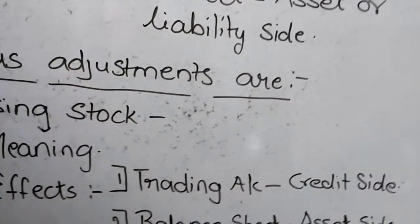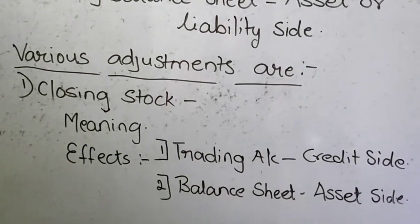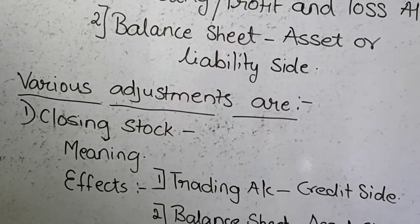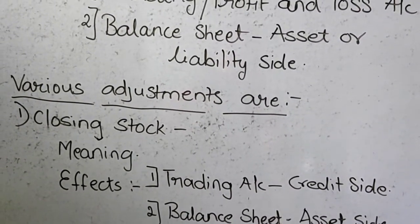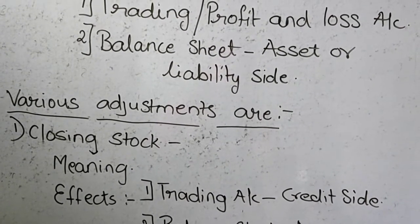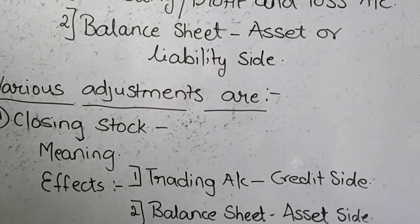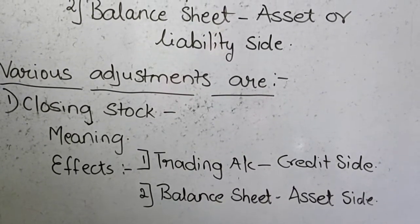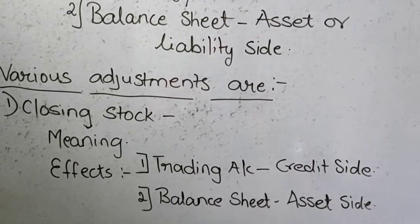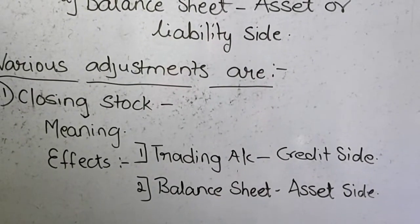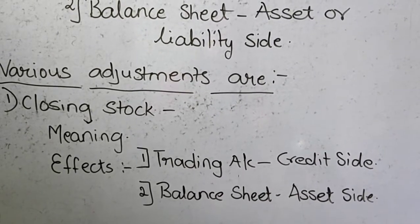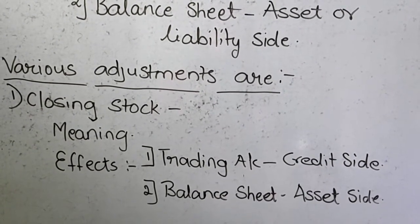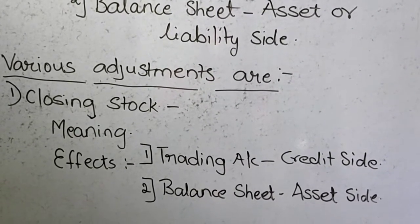The first adjustment is regarding the closing stock. Closing stock means the stock available with the businessman on the last day of the accounting year. Whatever goods are available in your godown on 31st of March are considered as your closing stock. These goods may be goods returned by your customers, goods which are damaged, or unsold goods. Whatever may be the reason, these goods are available with you on the last day of the accounting year and therefore will be considered as your closing stock. This closing stock will be recorded at cost or market price, whichever is less.